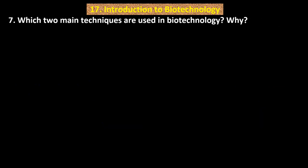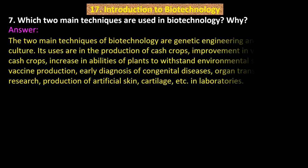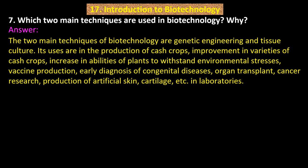Question number 7. Which two main techniques are used in biotechnology? Answer: The two main techniques of biotechnology are genetic engineering and tissue culture. Their uses include production of cash crops, improvement in varieties of cash crops, increasing abilities of plants to withstand environmental stresses, vaccine production, early diagnosis of congenital diseases, organ transplant, cancer research, production of artificial skin, cartilage, etc., in laboratories.